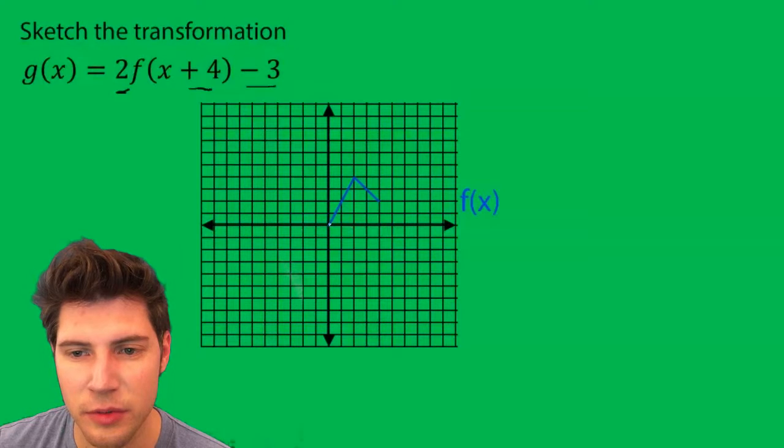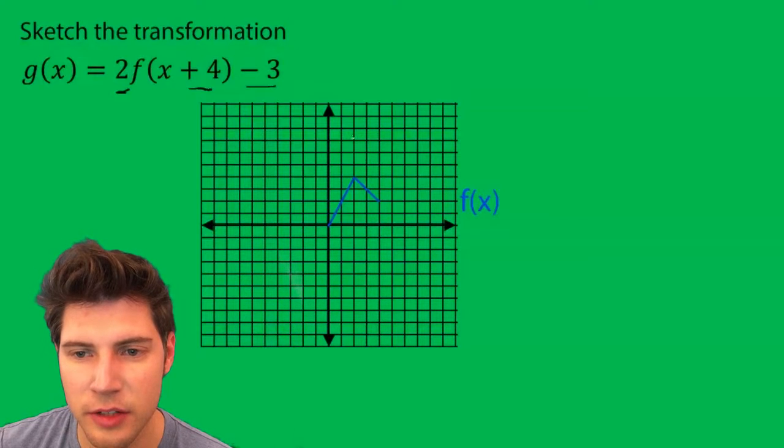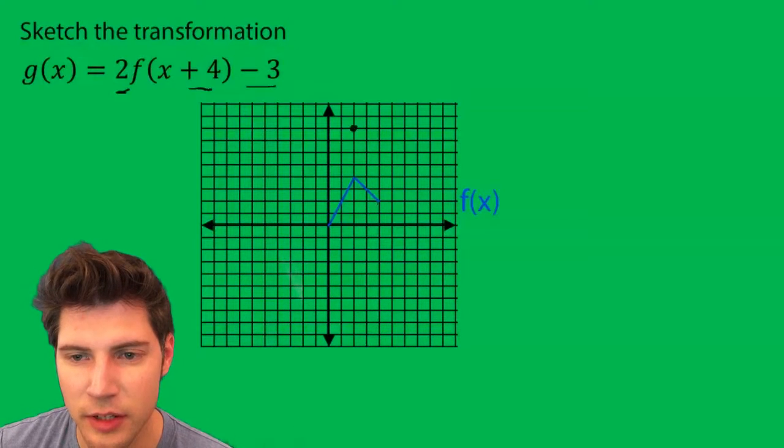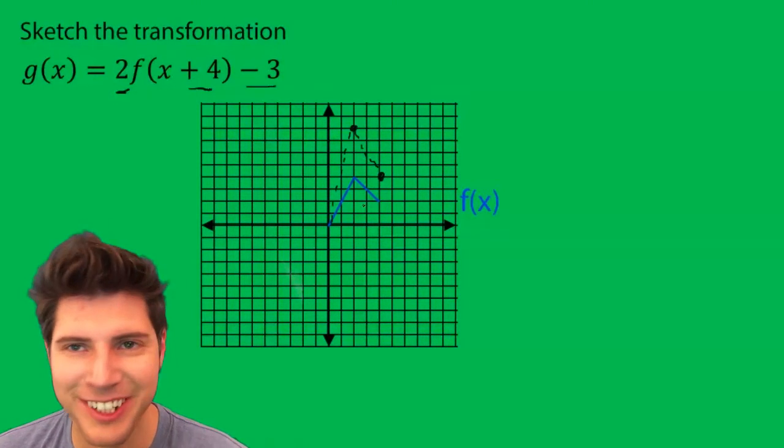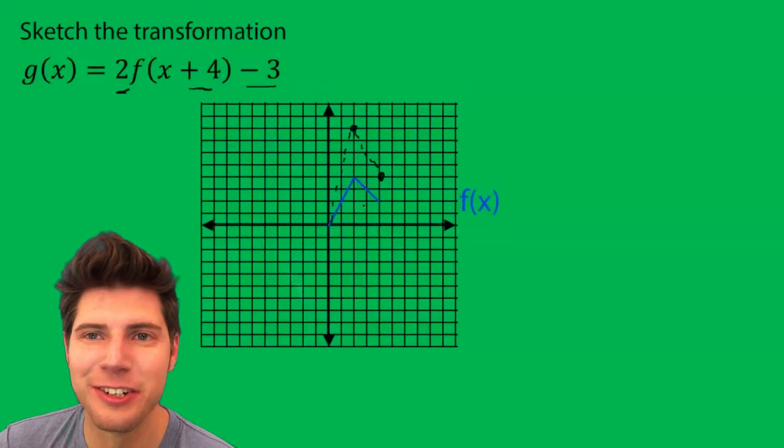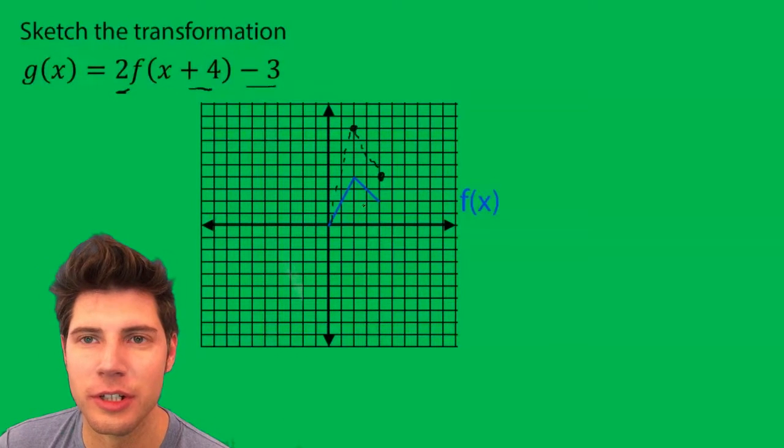So let's make it twice as tall. This one stays where it is. This one goes up to 8, and this one goes up to 4. So there's the graph after the vertical dilation.